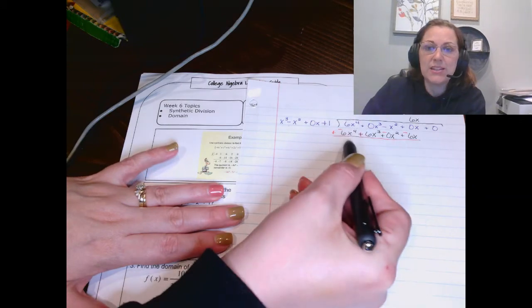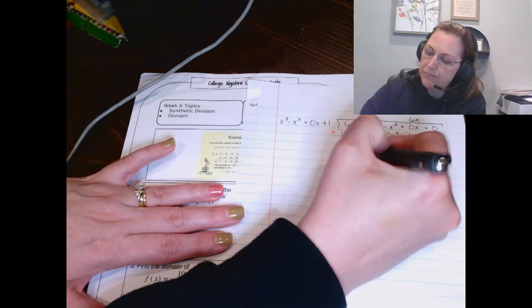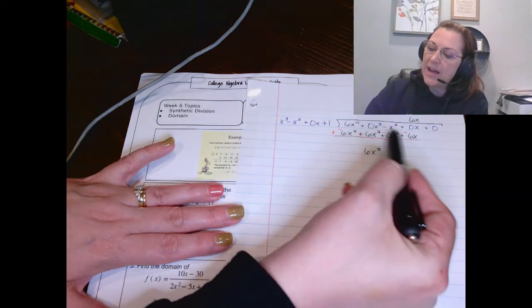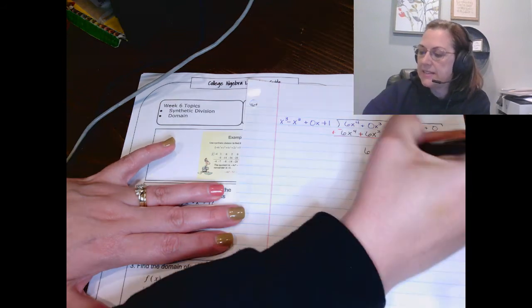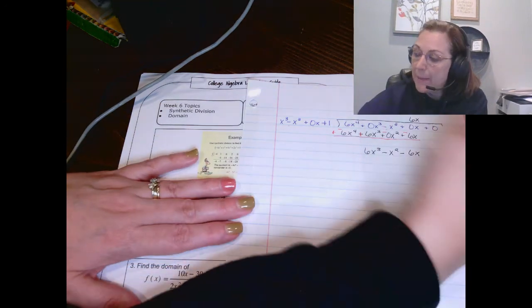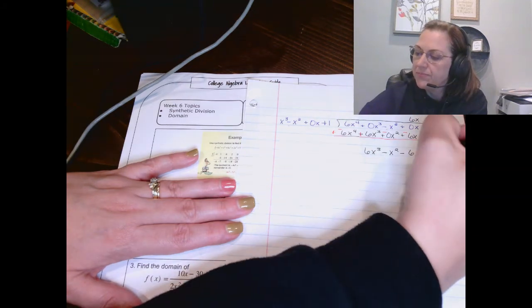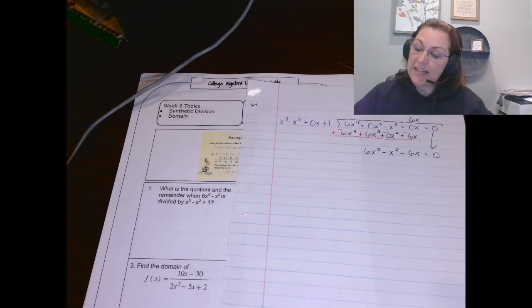Let's see what we got. Notice these two cancel. So then I'm left with 6X cubed minus X squared minus 6X. And then you would normally bring down. So we bring down that zero. Now we do it again.